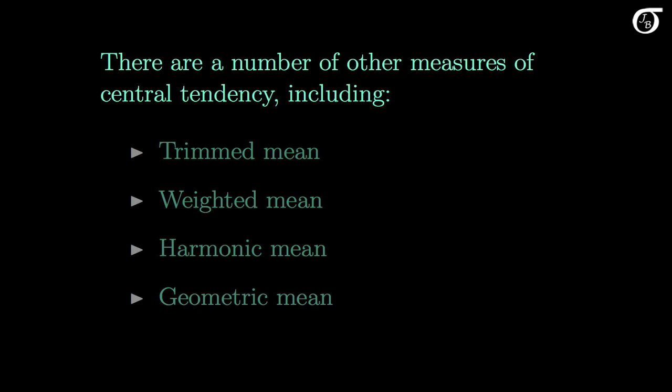There are many other measures of central tendency that are sometimes used, and here are a few. There's the trimmed mean, in which a certain percentage of the largest and smallest observations are removed before calculating the mean.